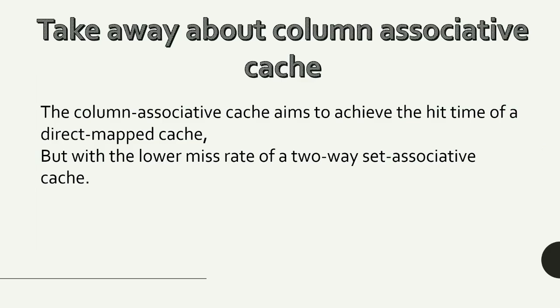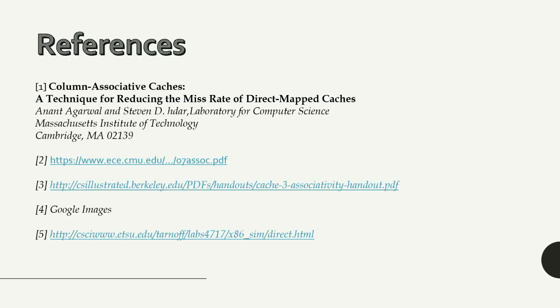Because hits are much more frequent than misses, the extra cycles required to implement column associative caching on a miss can be easily offset by a small improvement in hit access time on every hit, resulting in a smaller average memory access time compared to two-way set associative caches. These are the references I found if you want to learn more about column associative caches and hash functions.